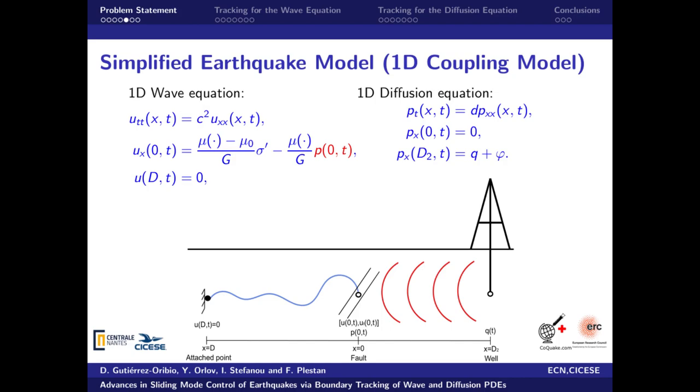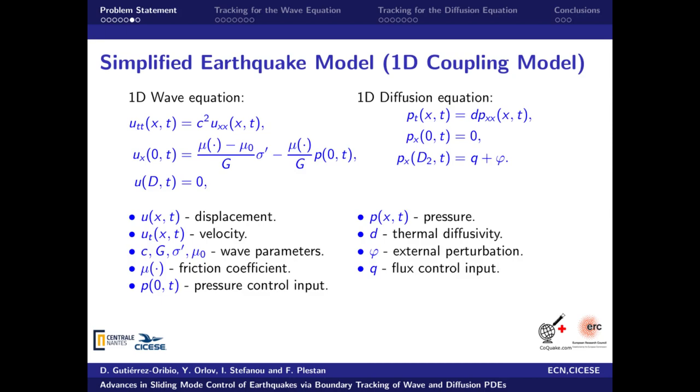The diffusion equation represents the pressure evolution of a well-injected fluid, where at one boundary the flux control input is applied and the pressure applied to the fault is applied at the other boundary. The states of the wave equation are u as displacement and ut as velocity. t is the time and x is the space variable, which can take values from 0 to d. This 1D wave equation has mixed boundary conditions. The first condition is a Neumann at x equal to 0, where the fault dynamics and the boundary control p0 from the diffusion equation are located. Here we have many fault parameters and the friction coefficient, which is a non-linear function of the displacement and velocity of the fault. The second one is a Dirichlet condition at x equal to d, representing an attached point.